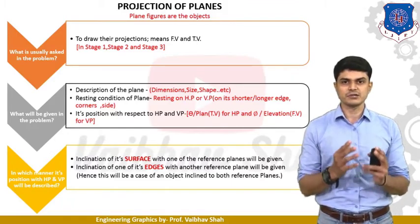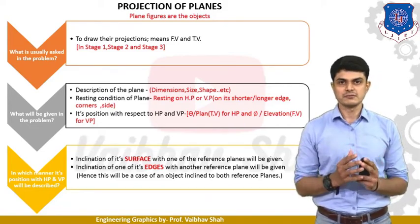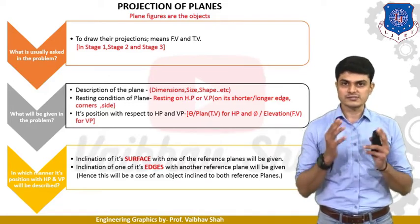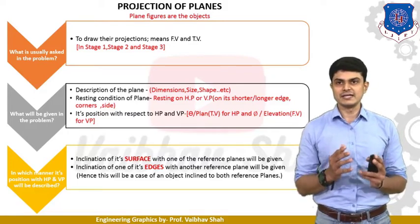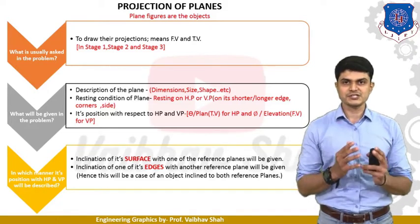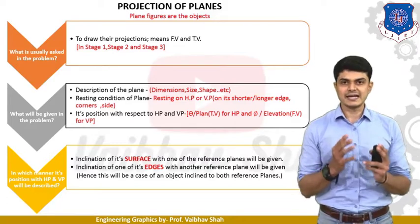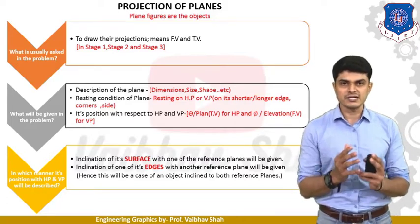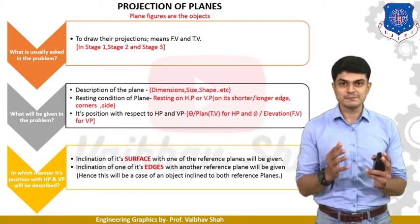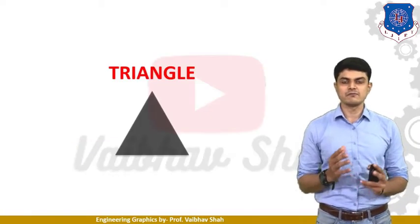Second, the resting condition of the plane — resting on HP or VP — must be given, which means resting on a shorter edge, longer edge, corner or side. And finally, in which manner the position with respect to HP and VP must be given. So inclination of its surfaces with one of the reference planes, and the inclination of one of the edges with another reference plane must be given. The plane must be inclined with both HP and VP. Let us understand it better by solving one of the examples.